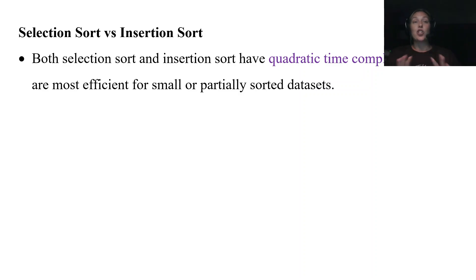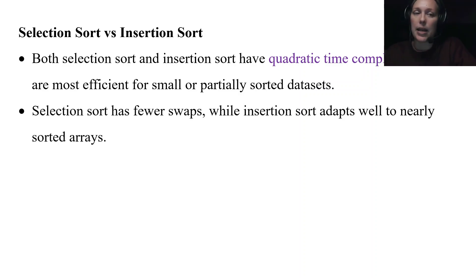One last little bit on selection versus insertion, the two sorting algorithms we've talked about. Both of them have what we call quadratic time complexity. And even though we don't talk about time complexity in AP computer science, it is an important thing to touch on when you're trying to compare which algorithms work the best. We determine which algorithms work the best based on the amount of time it takes for a computer to execute them. So a quadratic time complexity is most efficient for small or maybe partially sorted data sets. It's still a pretty high time complexity. The selection sort does have fewer swaps. The insertion sort you're kind of swapping a lot until you reach that correct position. But the insertion sort does adapt very well to almost completely sorted arrays.